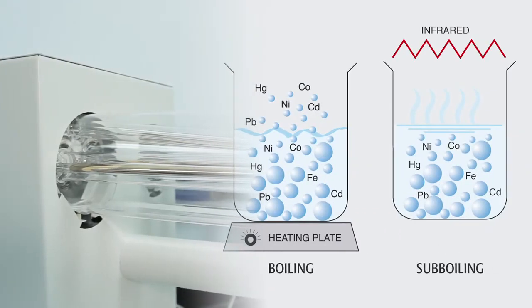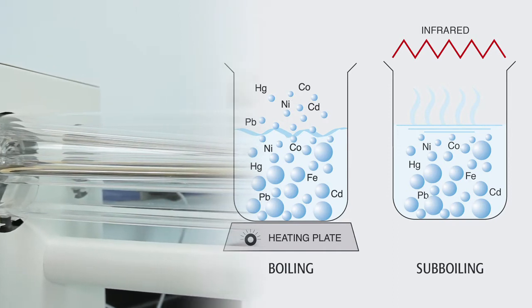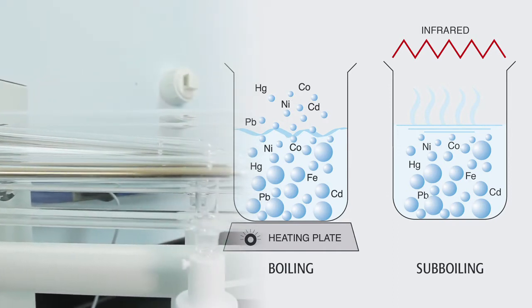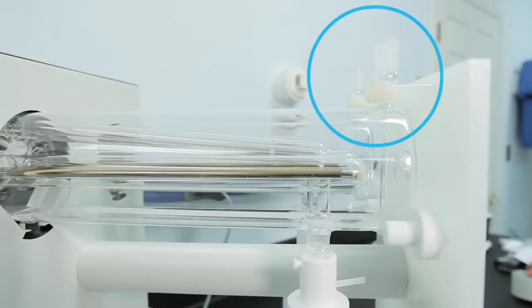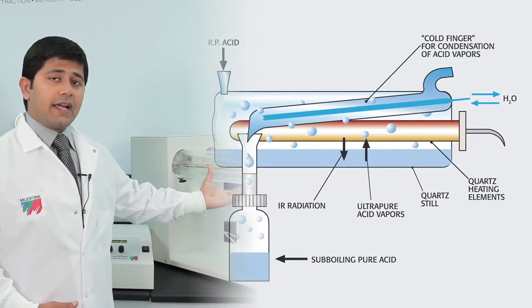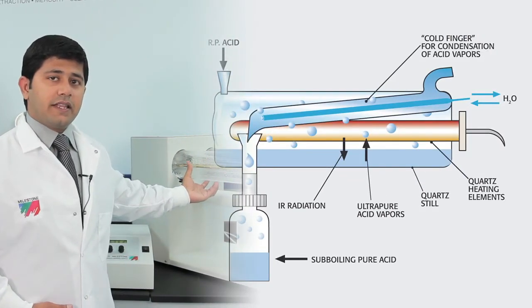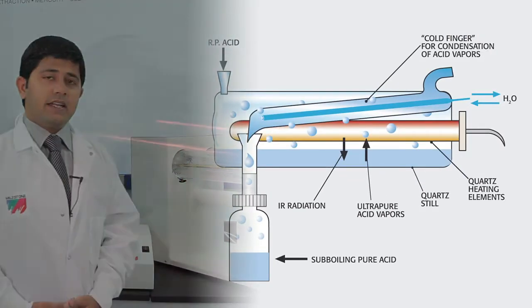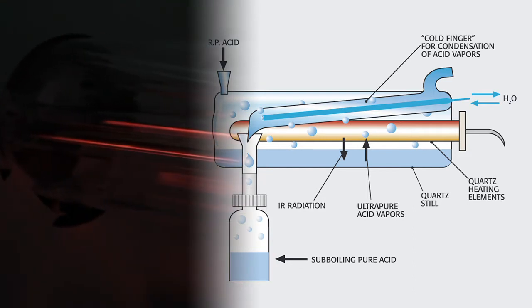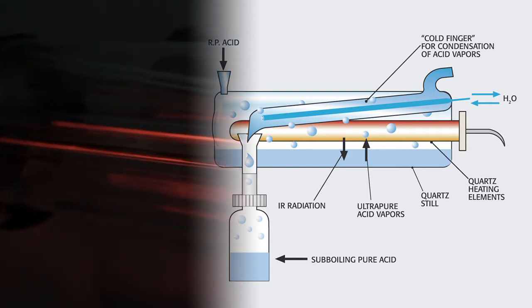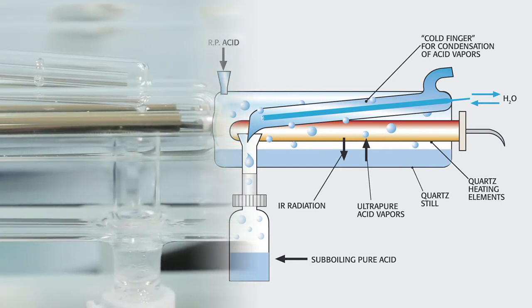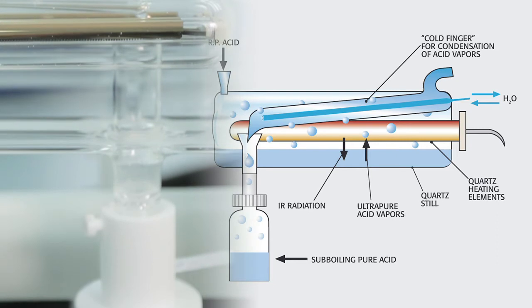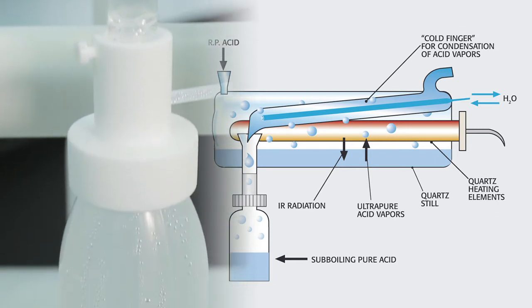So here's the DuoPure. It has two quartz stills that purify the acid using sub-boiling distillation. The only difference between the SubPure and the DuoPure is that the SubPure has only one quartz still. Reagent grade acid is added here, collected at the bottom of the quartz still, and then heated using an infrared lamp. The acid vapors from the bottom of the quartz still are collected on a cold finger inside the quartz, and the purified acid is collected in the PFA bottle.